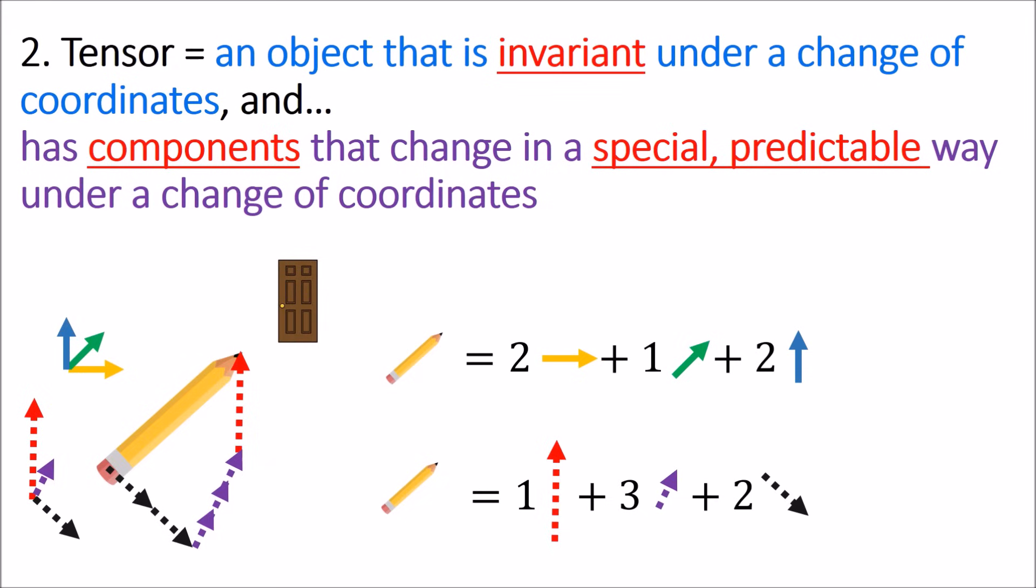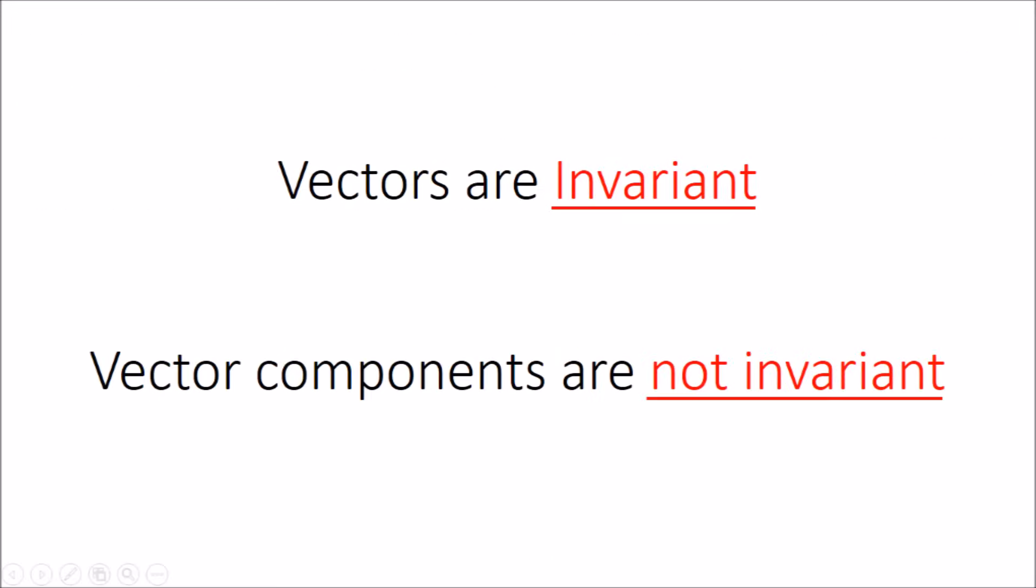So, you'll notice when I measure the pencil using different coordinate systems, I actually get different components. And this is a really important idea. The pencil's components are not invariant. They change depending on the coordinate system they use. The pencil is invariant, but the coordinates are not invariant. And again, that's a very important idea.